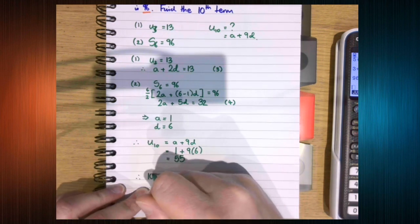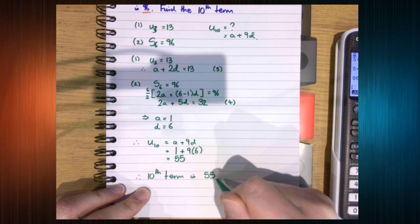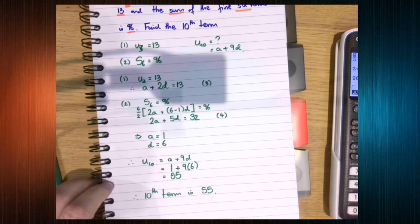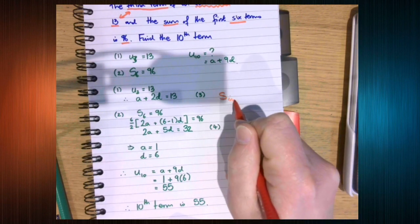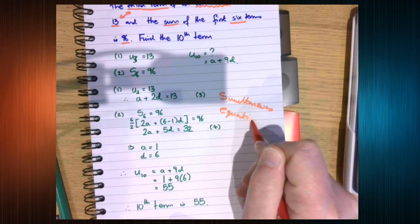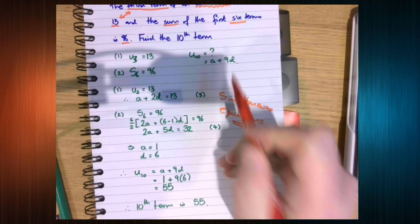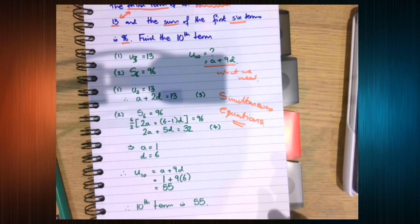So therefore the tenth term is 55. This idea of simultaneous equations is probably what is going to happen for this type of question in some way. So make sure you look for that when you are doing these questions. Pay attention to what we need or what we want to find, and what we need to find that.